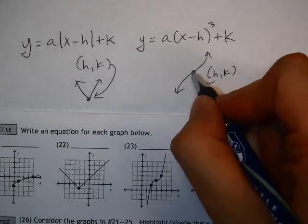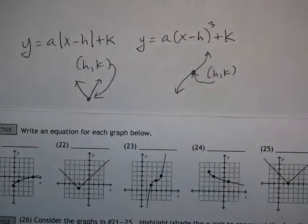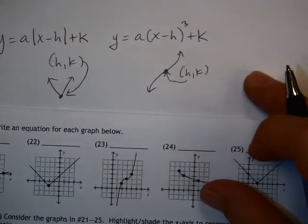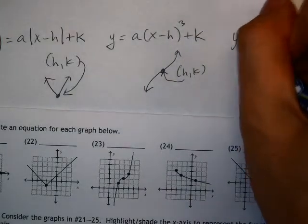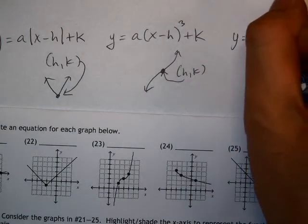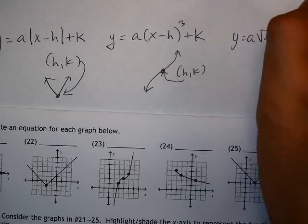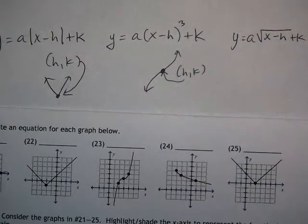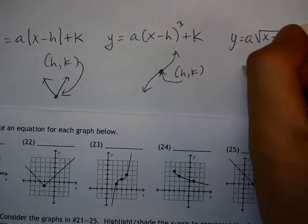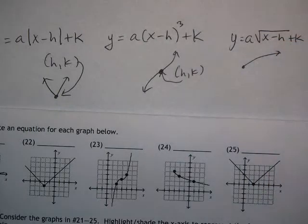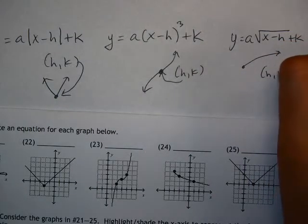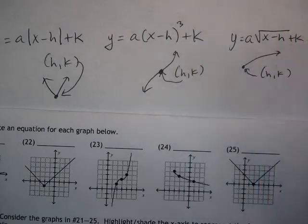And then the third one is y equals a times the square root of x minus h plus k, where you have this kind of curve, and the point h and k gives you that starting point.